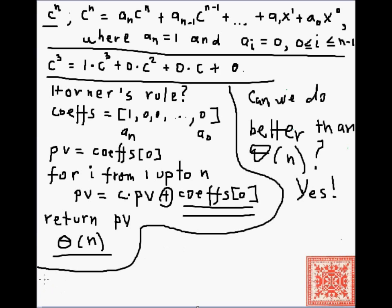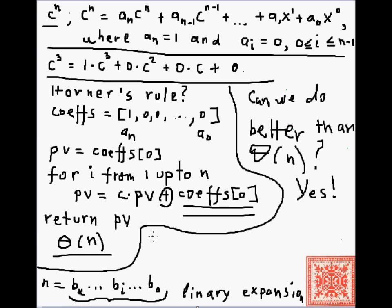Essentially, the technique used in this algorithm is the so-called change of notation. We've been using one notation, and now we're going to change to a different notation. It turns out, as frequently happens in algorithms, that a change of notation yields a more efficient algorithm. Every integer has a binary expansion — essentially a sequence of bits. For example, if n equals 2, then in binary it's 1, 0. If n equals 3, then in binary it's 1, 1, and so forth. Any integer has a unique binary expansion.